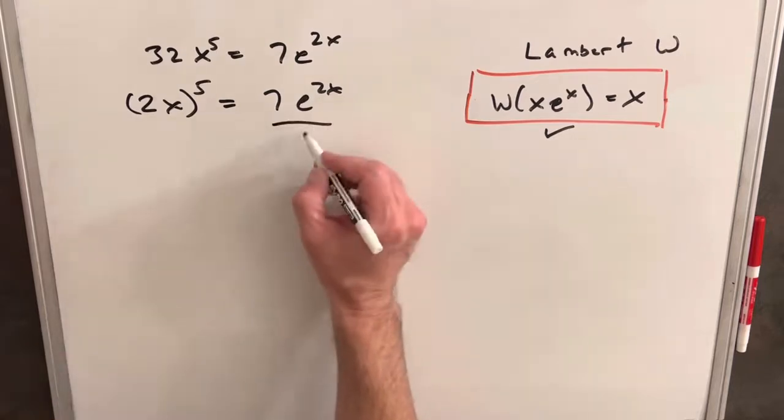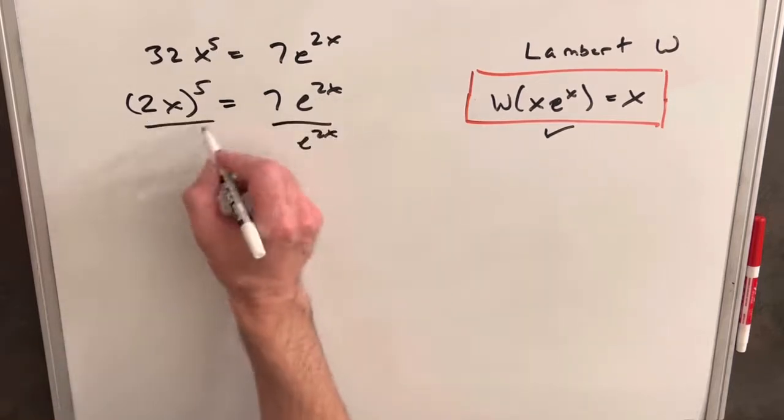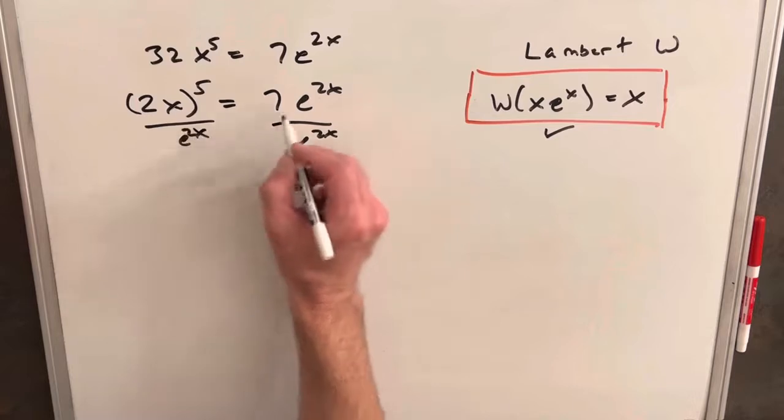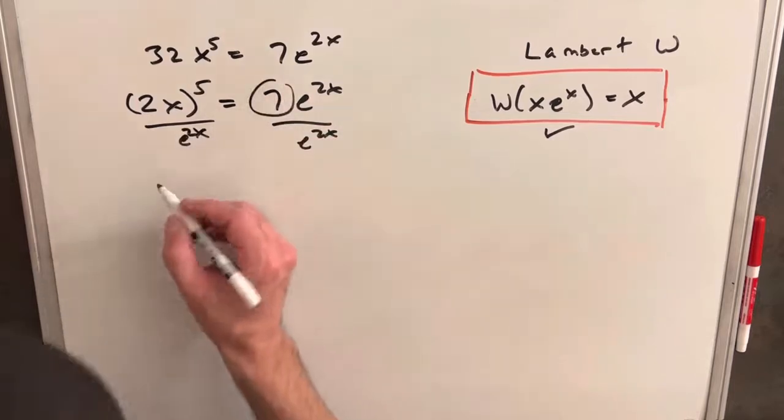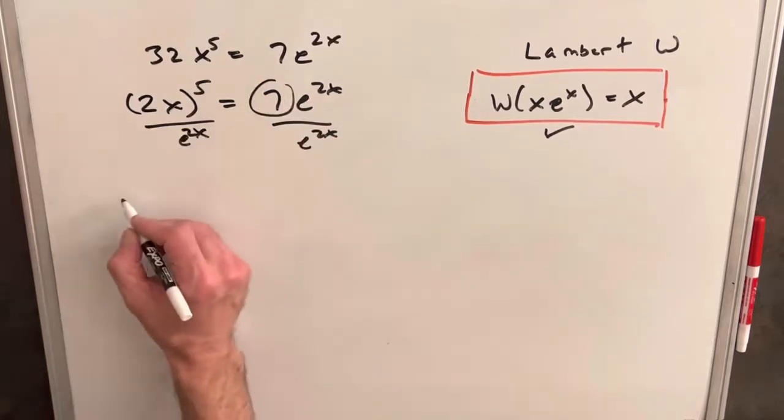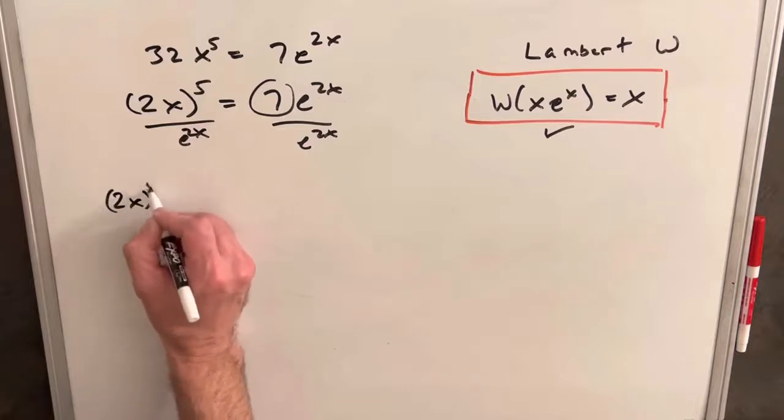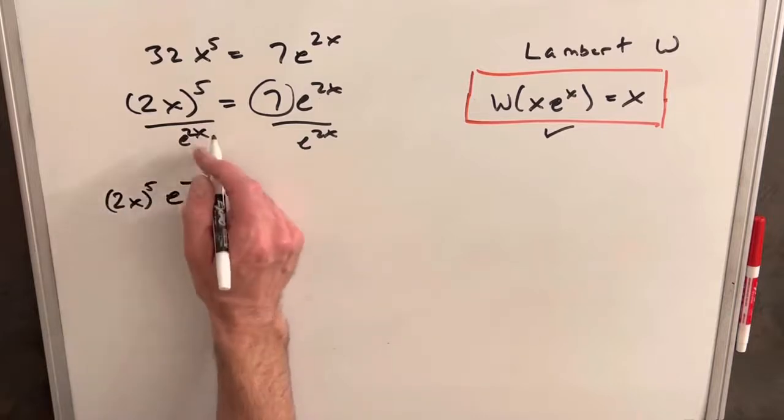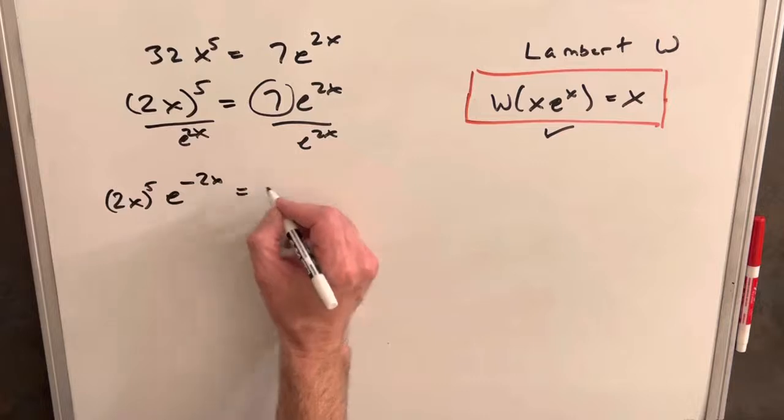And so what I can do is let's just divide both sides by e to the 2x, get this all on the same side. Not really concerned about this 7. And we're going to have, or not yet anyway, so we're going to have 2x to the 5th e to the minus 2x, because we were dividing, equals 7.